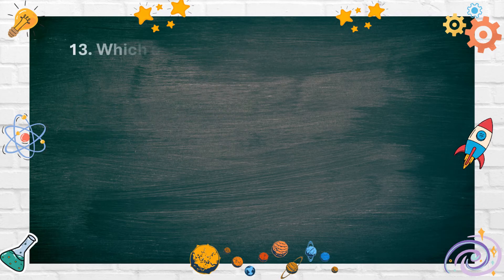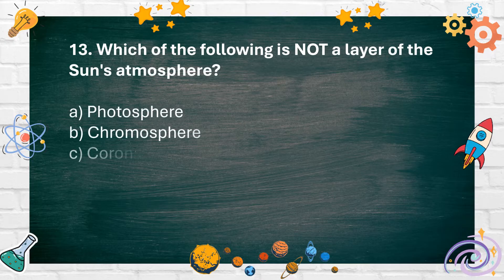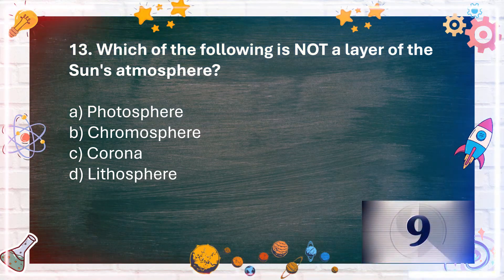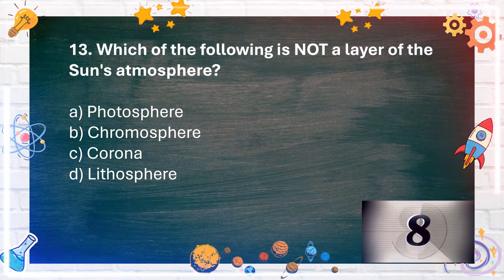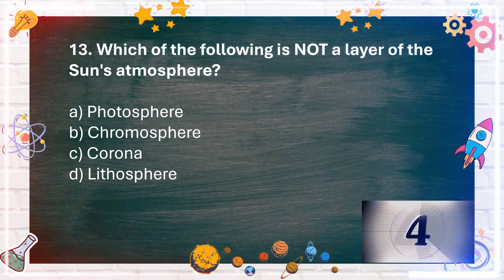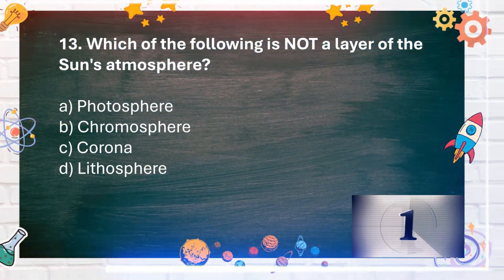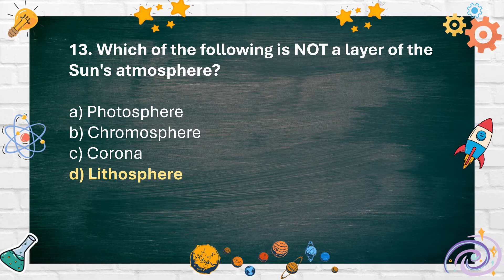Number 13. Which of the following is not a layer of the sun's atmosphere? A. Photosphere. B. Chromosphere. C. Corona. D. Lithosphere. The answer is D. Lithosphere.